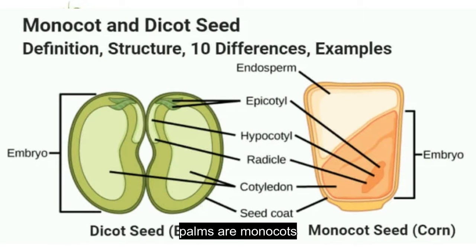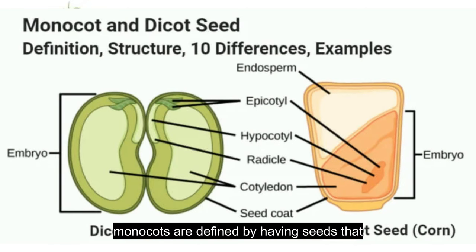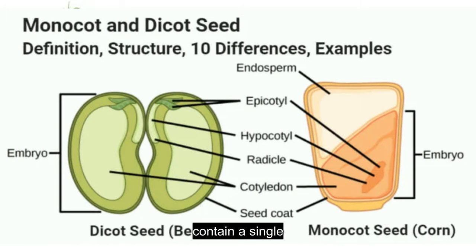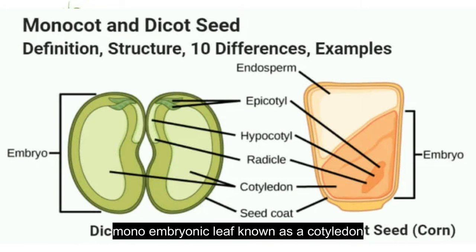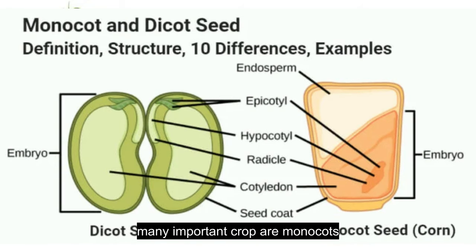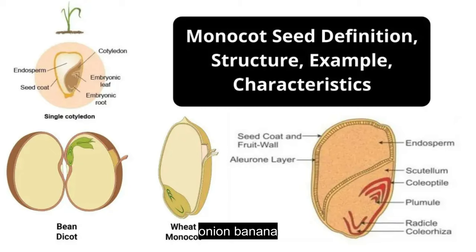Palms are monocots. Monocots are defined by having seeds that contain a single, mono, embryonic leaf known as a cotyledon. The majority of our agricultural plants and many important crops are monocots. These are rice, wheat, corn, sugarcane, bamboo, onion, banana and garlic.